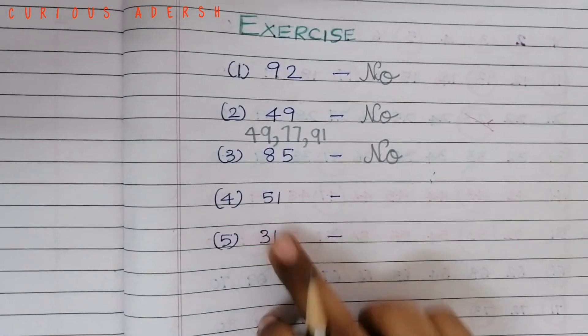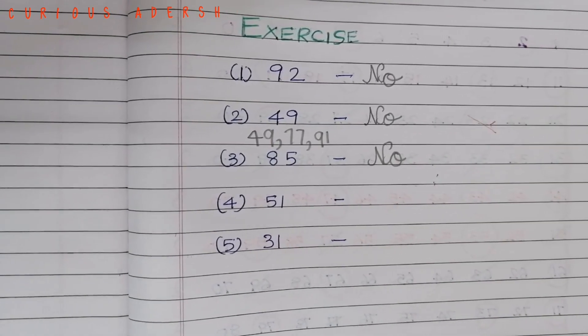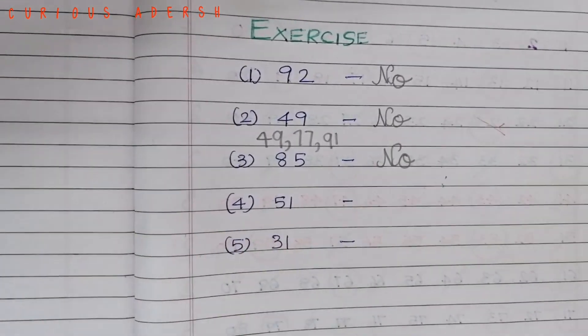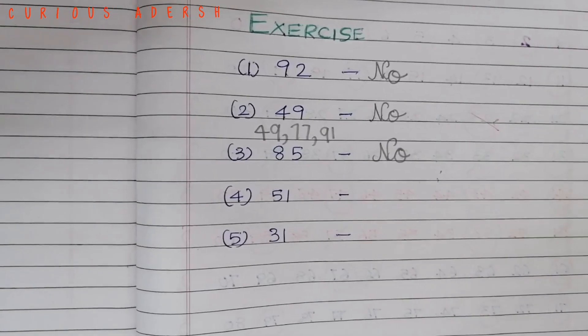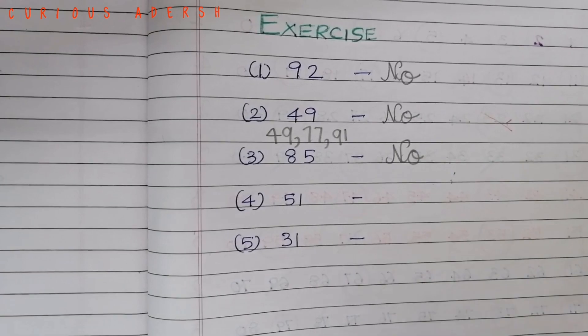51. 51 is not an even number. It doesn't end with 5. But 5 plus 1 is 6. 6 is a multiple of 3. So 51 is not a prime number.